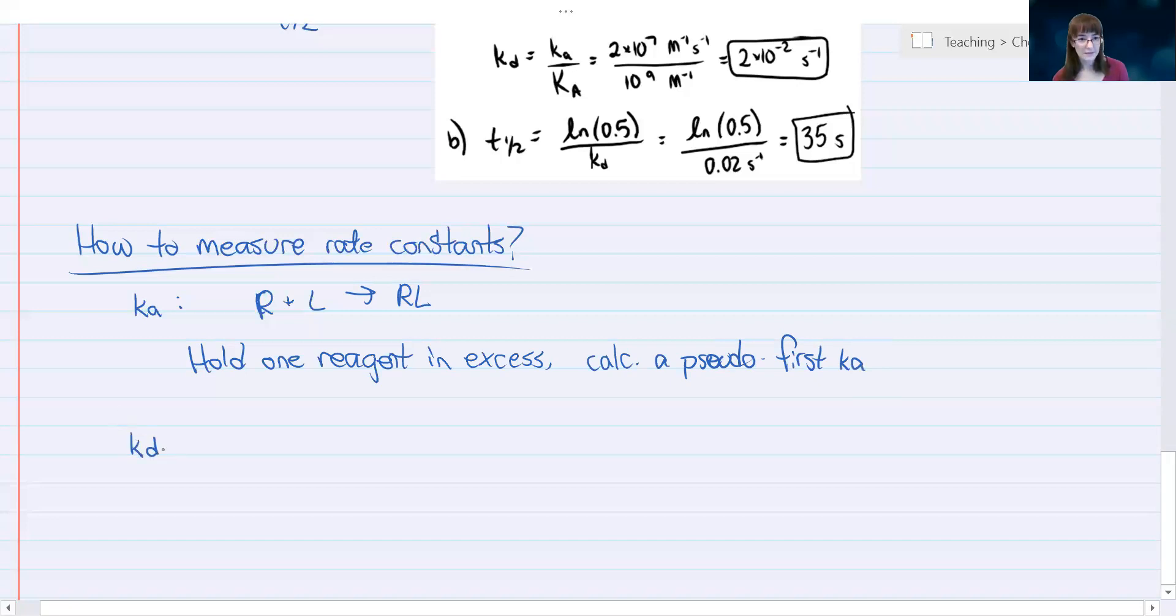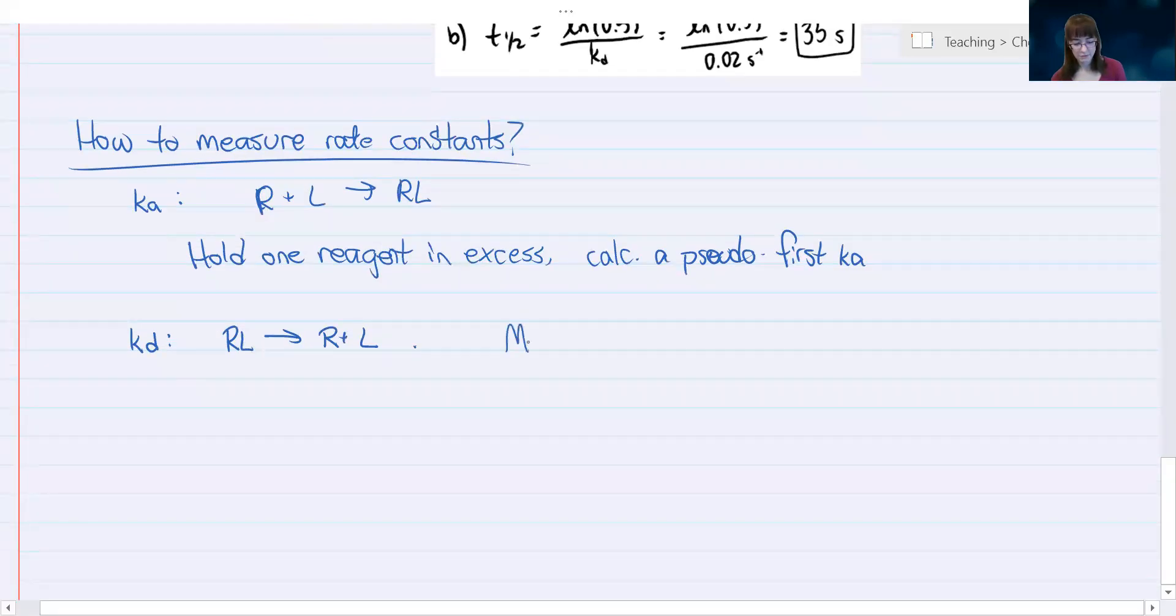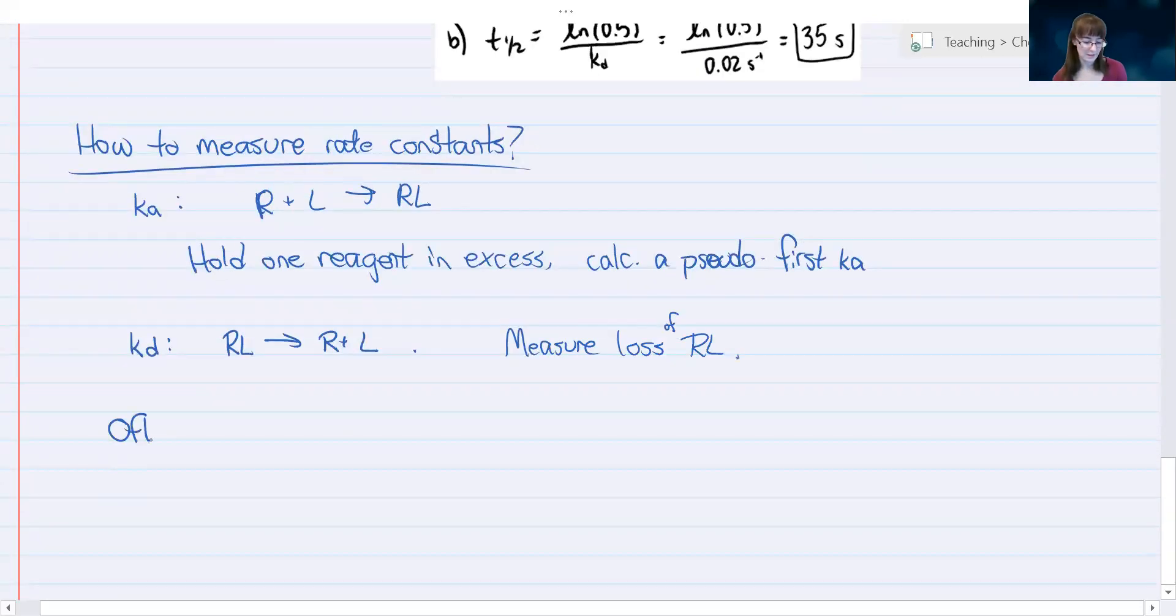And then to measure KD, which is a first order relationship. This is where we would actually have to start with the bound complex and then we measure the rate at which it falls apart. And so here you often will set up a system where you allow things to bind and then you start measuring during a wash period. So you measure loss of that bound complex, which means you have to have a way to get it bound in a way to tell that it's dissociating. And for both of these types of measurements, we often use a technique called, often abbreviated as SPR, which is surface plasmon resonance.